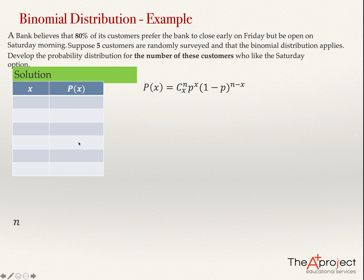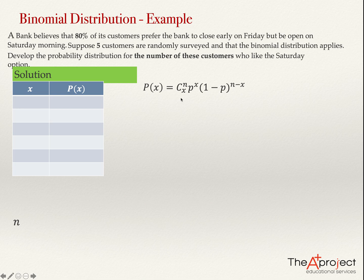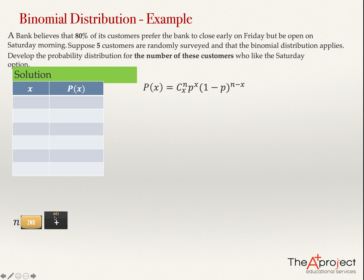You can compute this with a calculator. I have the BA II Plus from Texas Instruments. To type combinations, I type N first — in this case N is 5 — then press the second function key and then the NCR key. In most calculators, NCR requires pressing the second function key first. Then I press the value of X.